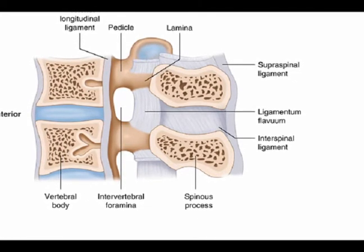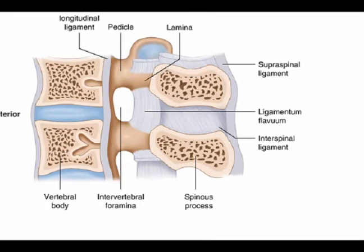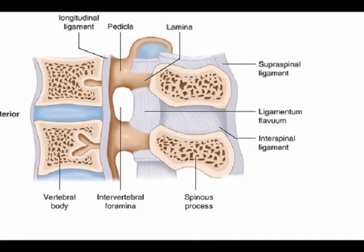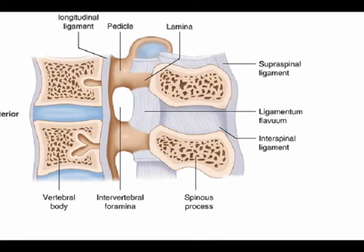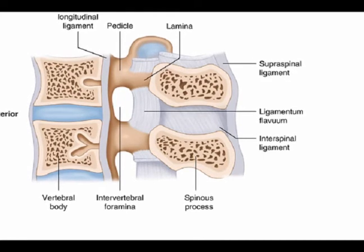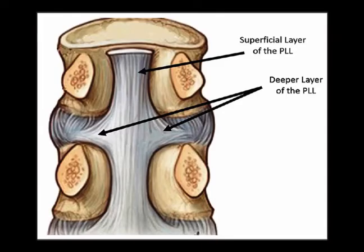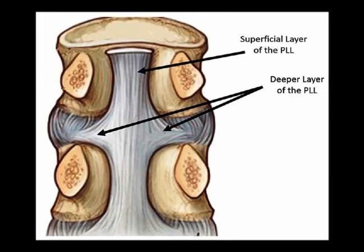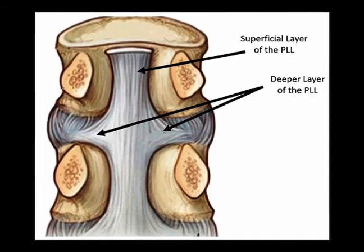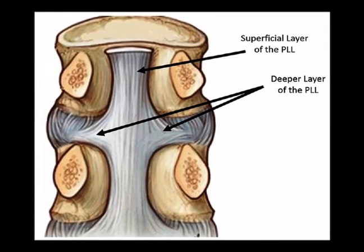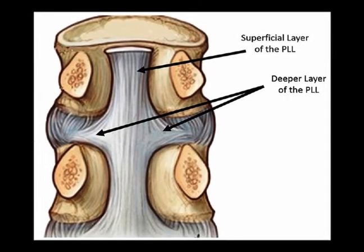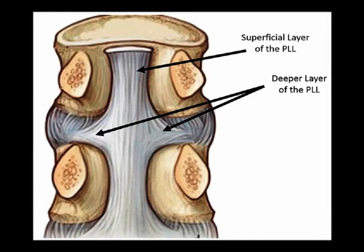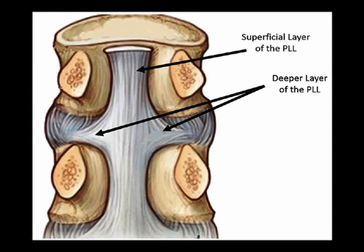It is composed of longitudinal fibers that are denser than the fibers of the anterior longitudinal ligament. The denser fibers are deeper and span one vertebra, while the superficial fibers span three to four vertebrae.